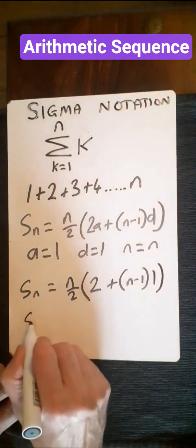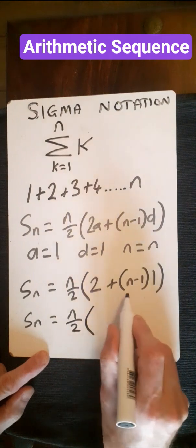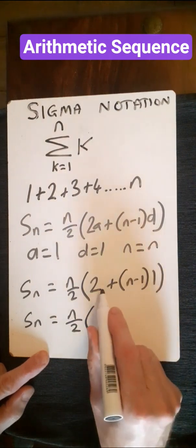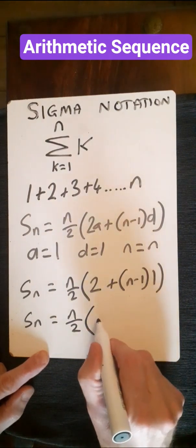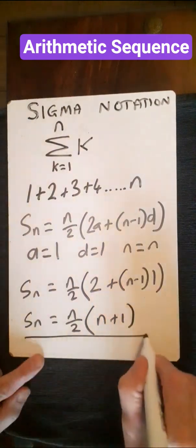And then simplify this off, we've got n over 2, 2 plus n minus 1 times 1, so we've got 2 plus n minus 1, so therefore we'll have n plus 1. And then we are done.